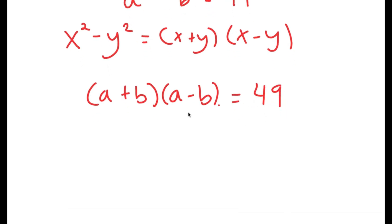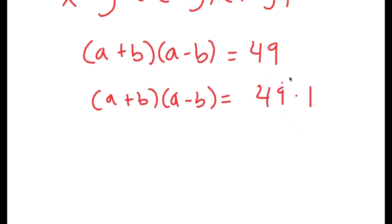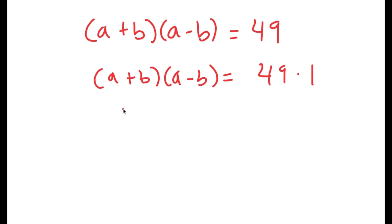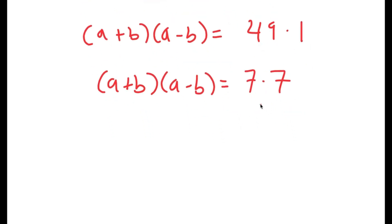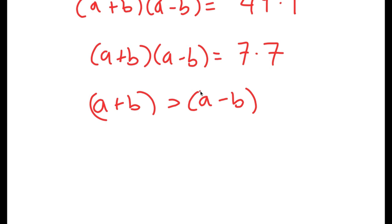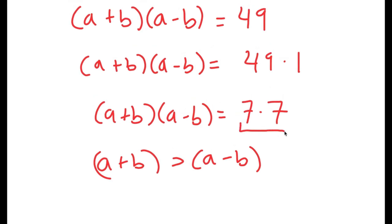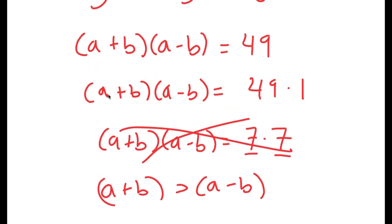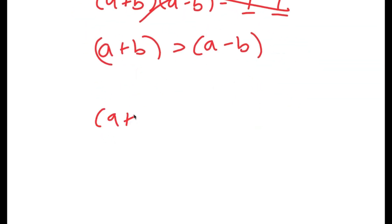From here, I can rewrite 49 as 49 times one — so that's true — and this I can rewrite as seven times seven. Now we obviously know that a plus b is going to be greater than a minus b. So this means we can't rewrite a plus b times a minus b as seven times seven, since seven and seven are equal. So this possibility is out, and 49 times one is the only possibility here.